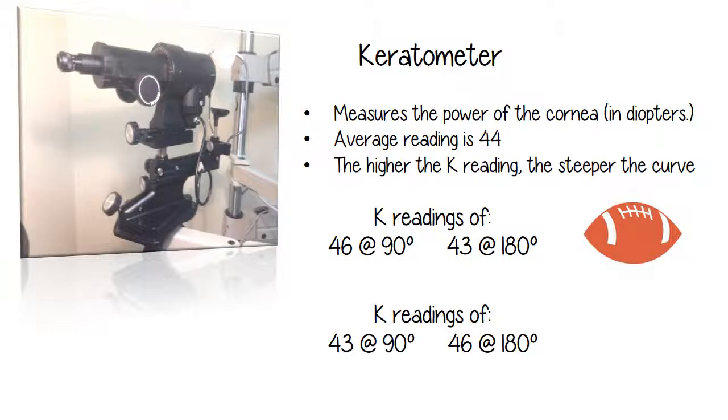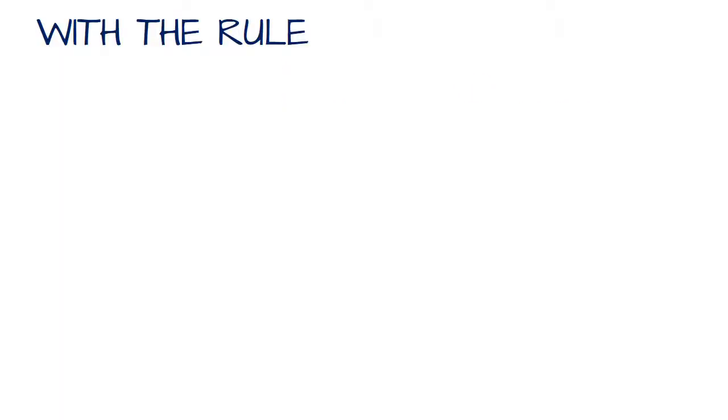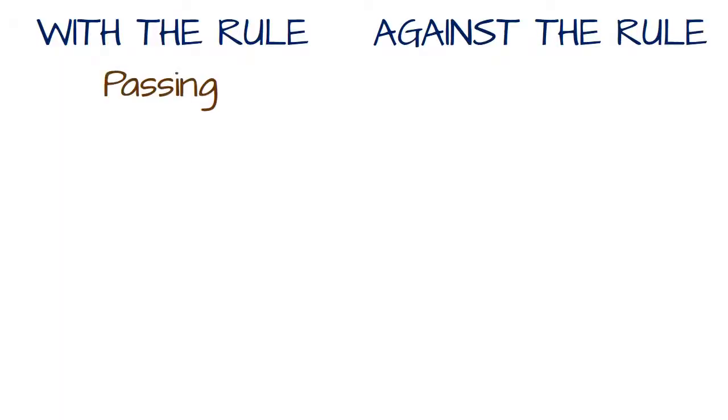Now if you flip those two readings around and you have 43 at 90 and 46 at 180, 90 degrees is going to be flatter, 180 is going to be steeper. So what you're going to have is an eye in the football punting position, also known as against the rule astigmatism.